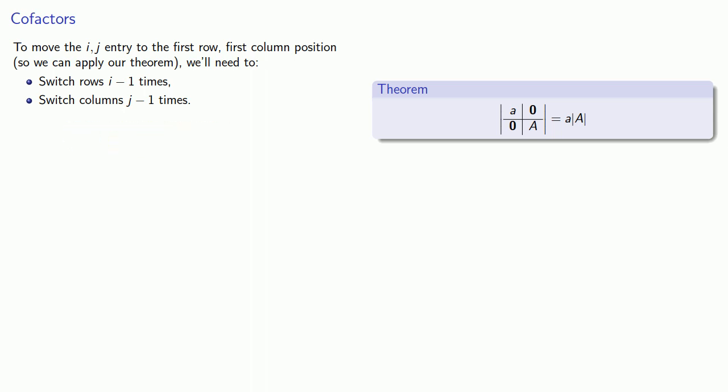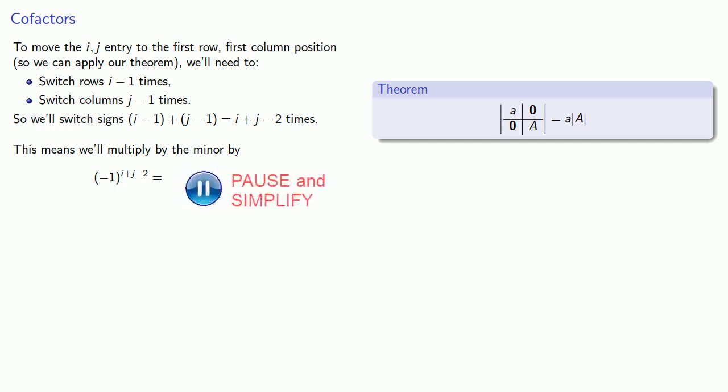Now, every time we switch a row or switch a column, we'll change the signs. So this means we'll switch the signs i minus 1 plus j minus 1, or i plus j minus 2 times. And that means we'll multiply the minor by negative 1 to power i plus j minus 2. And we can simplify that a little bit to minus 1 to power i plus j.